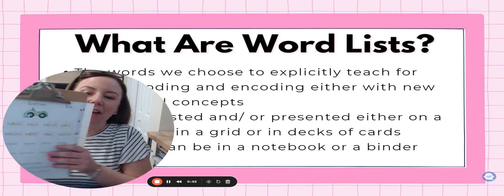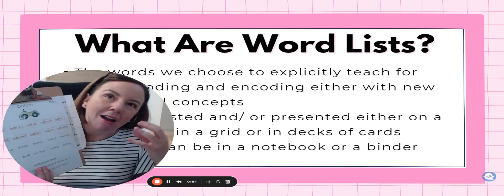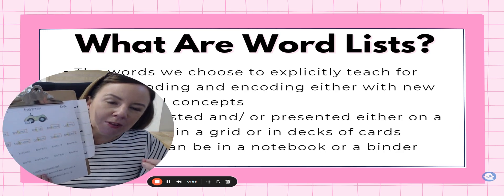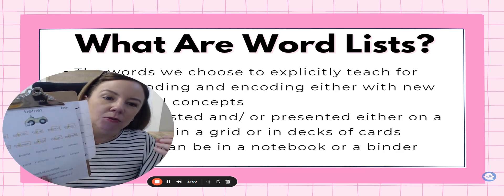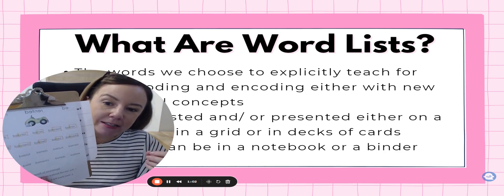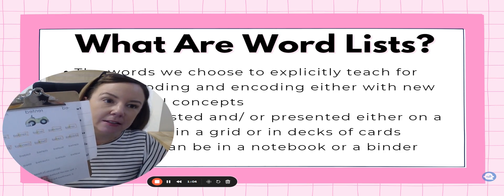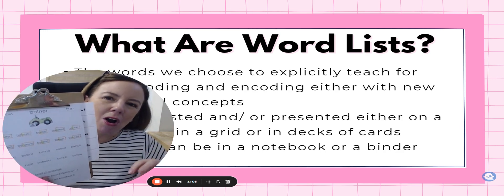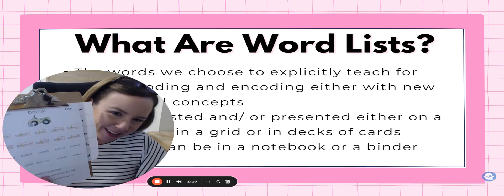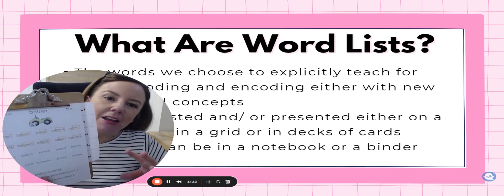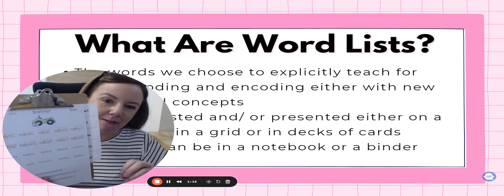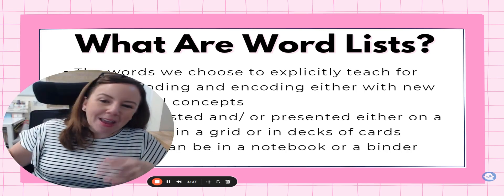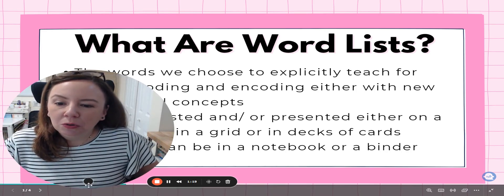Word lists at the heart are really like one of our scaffolded tools. They're tools that we are providing to scaffold and practice a lot of different things — one of them being in the intervention setting to work on our decoding skills and practicing at the word reading level. But what are they and why do we use them?